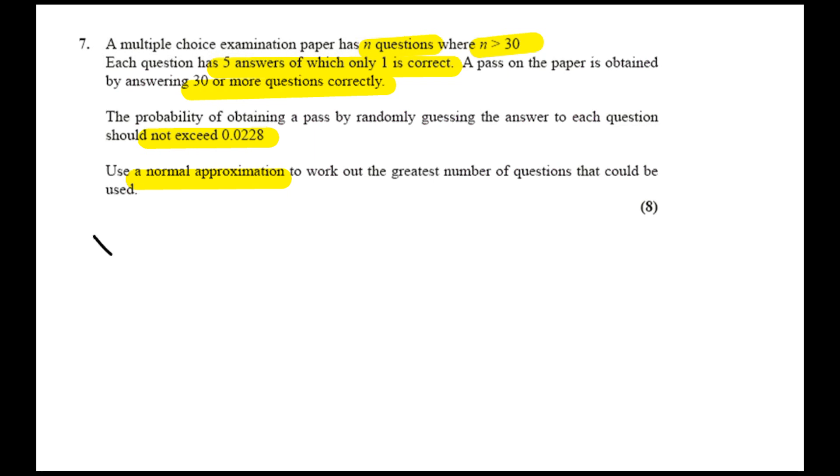We are actually using a binomial distribution, because there is going to be a set number of questions and a fixed probability. Only I don't know what that set number is - we're going to try and figure that out. Probability of one-fifth. Expectation is n times one-fifth. Since I'm about to do a normal approximation, I should definitely get down the variance. Variance of 4 over 25, and standard deviation is the root of that - two-fifths root n.